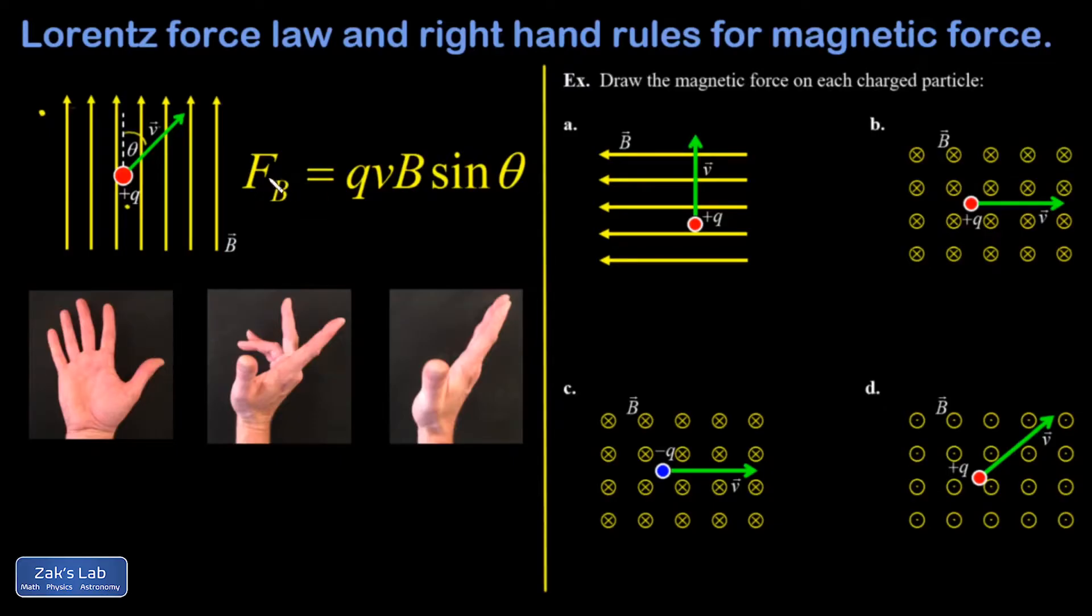So it turns out the magnetic force is given by this Lorentz force law. The magnetic force is proportional to the size of the charge. Interestingly enough, it's proportional to the speed itself, so if you double the speed of the particle, the force doubles. And of course, the force is proportional to the strength of the magnetic field.